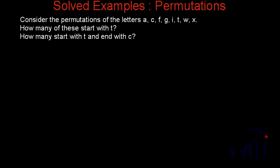Hi, so here we have one more solved example based on permutation. The problem statement says, consider the permutations of letters A, C, F, G, I, T, W, X. How many of these start with T? And we have to find how many of them will start with T and end with C.